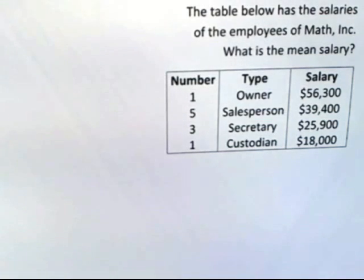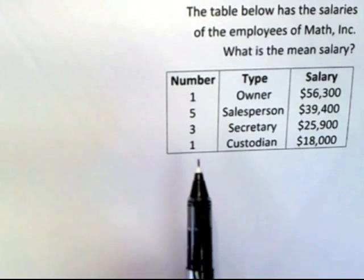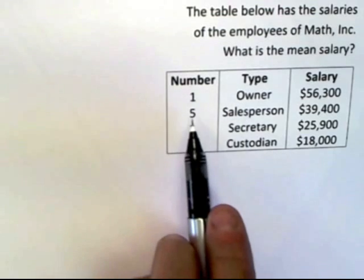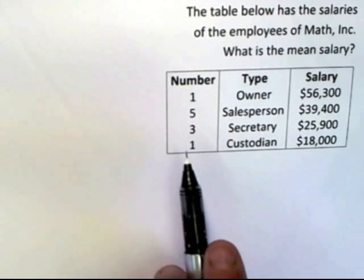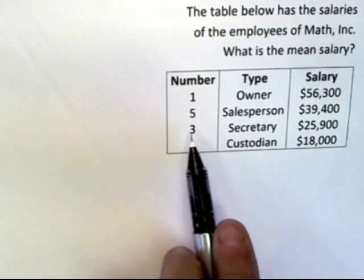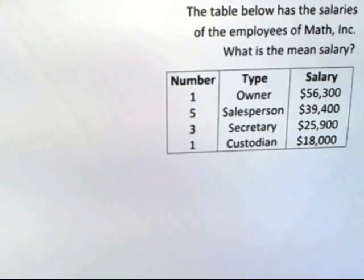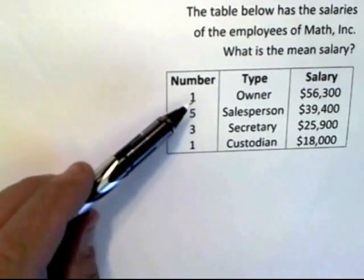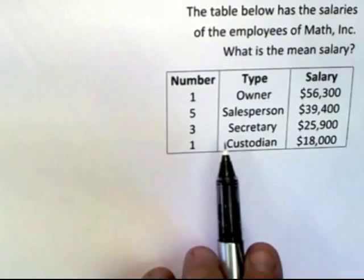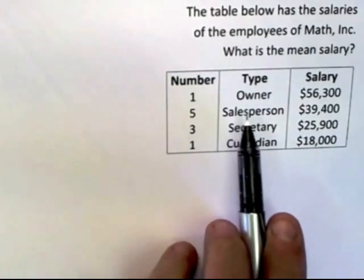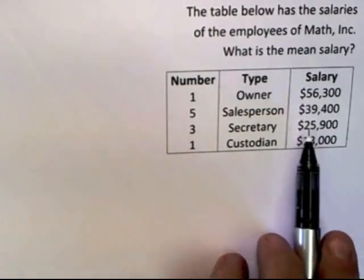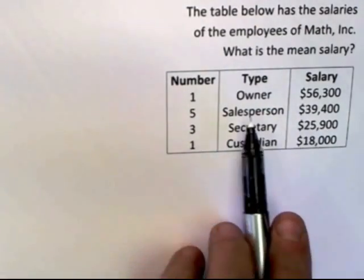This problem says the table below has the salaries of the employees of Math, Inc. What is the mean salary? Be sure to interpret this correctly. There's one owner, five salespeople, three secretaries, and one custodian. So there are a total of ten employees. When we're averaging, we're going to be adding up ten numbers, not four.